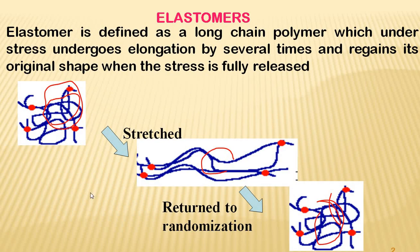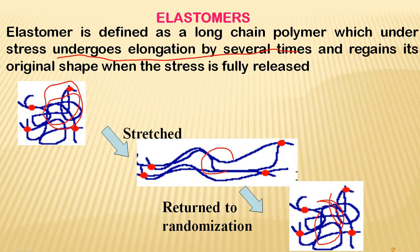Elastomers are nothing but rubbers — they are also called rubber. An elastomer is defined as a long chain polymer which under stress undergoes elongation by several times. In the coiled state when no force is applied, when you stretch it, these elastomers can be stretched to 4 to 10 times their original length. They are high polymers which have elastic properties in excess of 300 percent. When you release the pressure, it comes back to its original shape — it goes back to the coiled state.